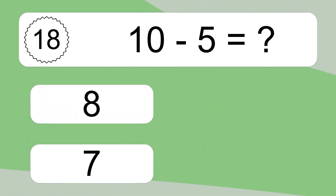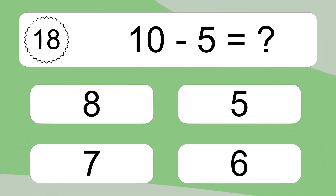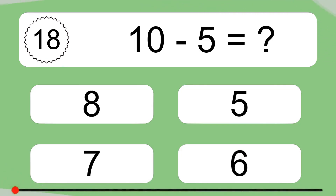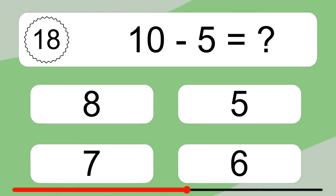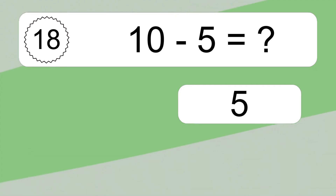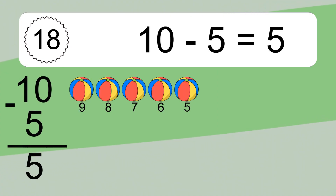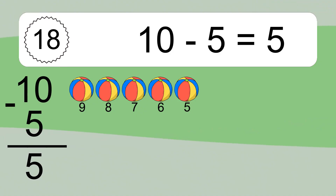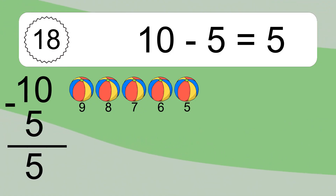10 minus 5 equals what? 10 minus 5 equals 5. Let's count it: 9, 8, 7, 6, 5.